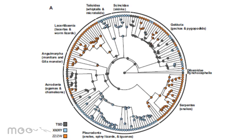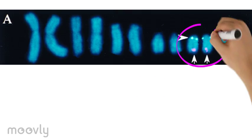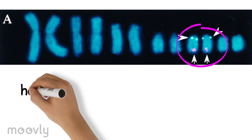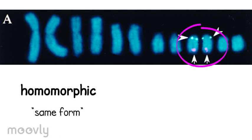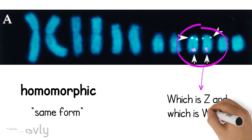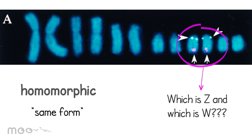Moreover, numerous transitions have occurred among these mechanisms over the course of hundreds of millions of years. Because of these frequent and rapid transitions, many species' sex chromosomes have scarcely differentiated, rendering them homomorphic. Researchers simply can't distinguish them in a karyotype — they're impossible to tell apart.